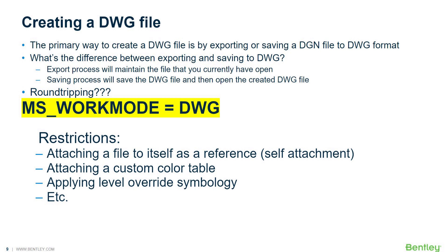For example, think of things such as fonts, line styles, blocks or cells, the scale, the size — colors can change, line styles can change. We often get calls where line styles or text styles have been lost. So you might be thinking you'll save the DGN file to avoid these restrictions, but in most cases, try not to do that.